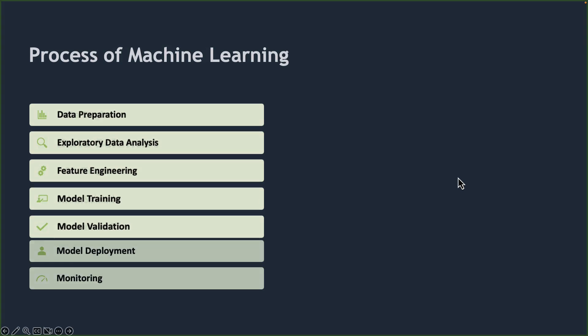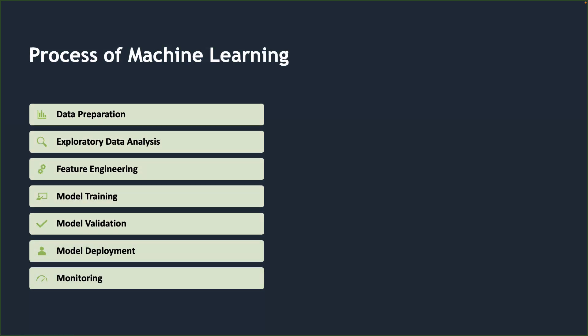Building a machine learning project involves a specific, non-fixed pattern. The process includes data preparation, exploratory data analysis, feature engineering, model training, model validation, deployment, and monitoring. In the data preparation step, we perform data engineering activities to prepare raw production data and make it available for consumption — extracting features and labels from that raw data.